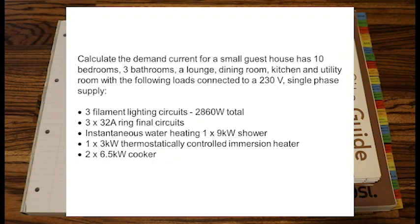On your screens you'll see the question. Calculate the demand current for a small guest house that has 10 bedrooms, 3 bathrooms, a lounge, dining room, kitchen and utility room with the following loads connected to a 230V single phase supply: 3 filament lighting circuits with 2860 watts total, 3 x 32 amp ring final circuits, instantaneous water heater, 1 x 9 kilowatt shower, 1 x 3 kilowatt thermostatically controlled immersion heater, and 2 x 6.5 kilowatt cookers.